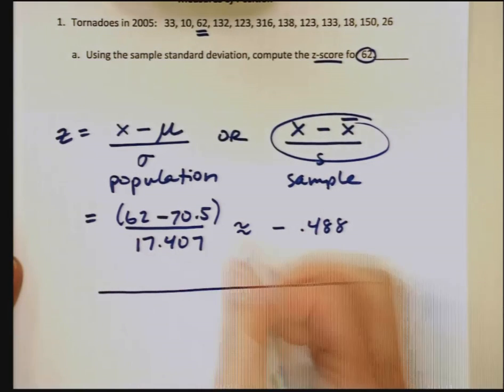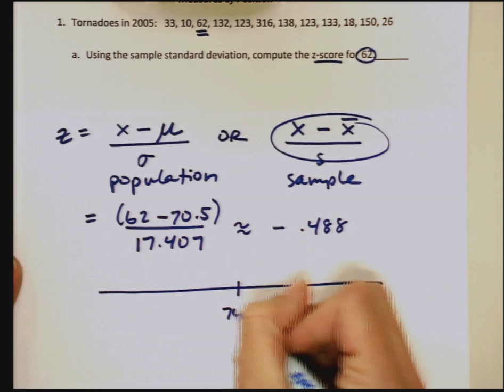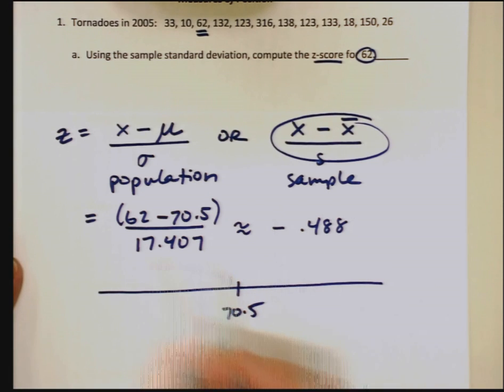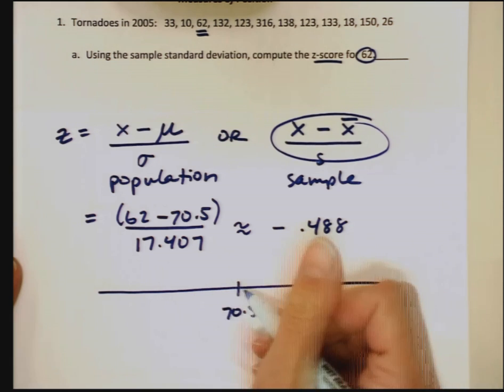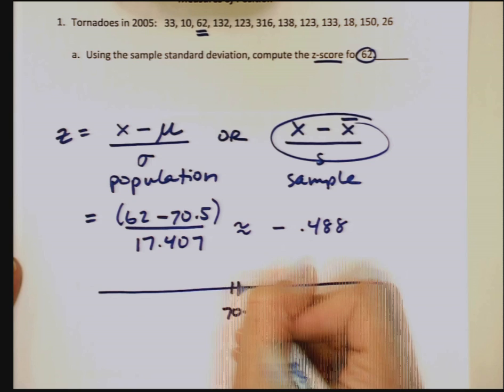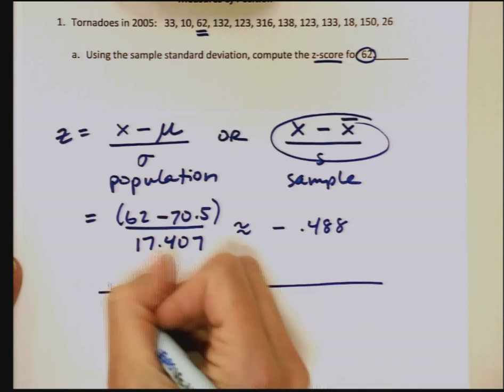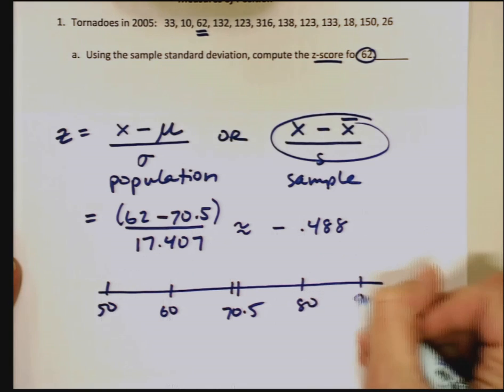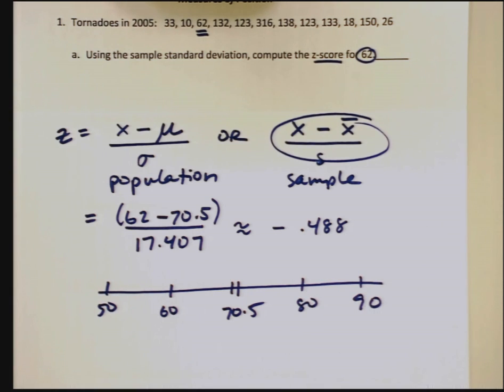Let me draw you a picture of what's going on here. We had a mean of 70.5. I want to know how 62 compares. I know 62 is lower. So if this is 70, 70.5, we'll say this is 70 here, 60, 50, 80, 90, and so on.